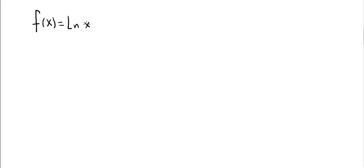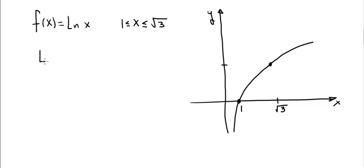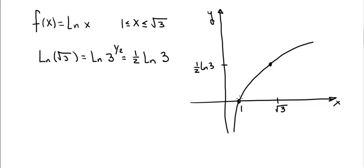We're going to find the arc length of f(x) = ln(x) for x between 1 and √3. The graph of the natural log function looks like this. When x = 1, ln(1) = 0, so we start at that point. When x = √3, the y-coordinate is ln(√3) = ln(3^(1/2)) = (1/2)ln(3). We want to find the length of the curve between these two points.